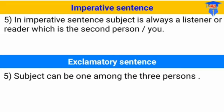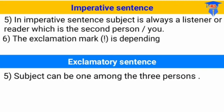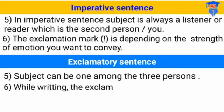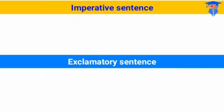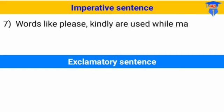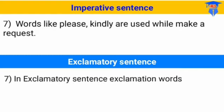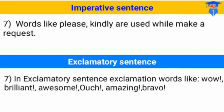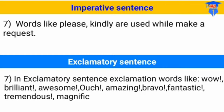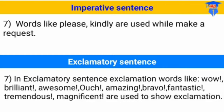You should remember: imperative sentence ends with a full stop and can also use an exclamation mark — it depends on the sentence. But exclamatory sentence always uses an exclamation mark. Also, words like 'please' and 'kindly' are used when making a request — kalau kalian ingin meminta sesuatu kalian boleh menggunakan 'please.' For exclamatory sentence, you can use words like 'wow,' 'brilliant,' 'awesome,' 'amazing,' 'fantastic.'